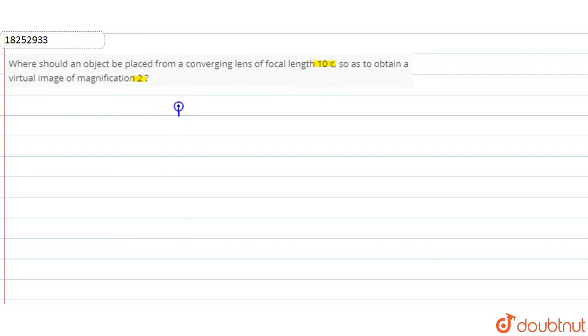In this question, we have given the magnification 2 and this is the case of virtual image. So the magnification is positive. Now the focal length given is 10 cm, so we need to tell the object distance. What is u?